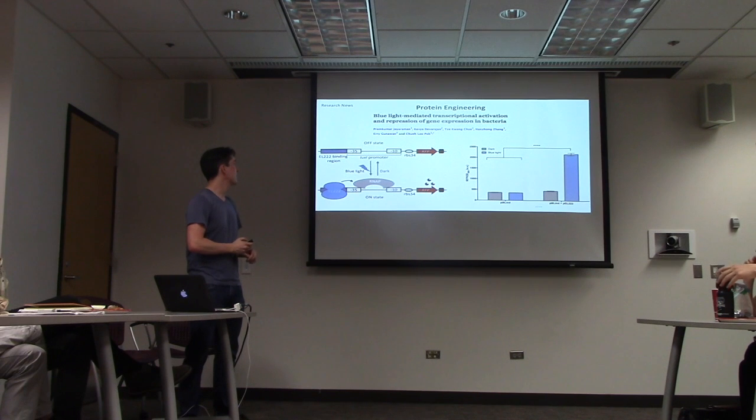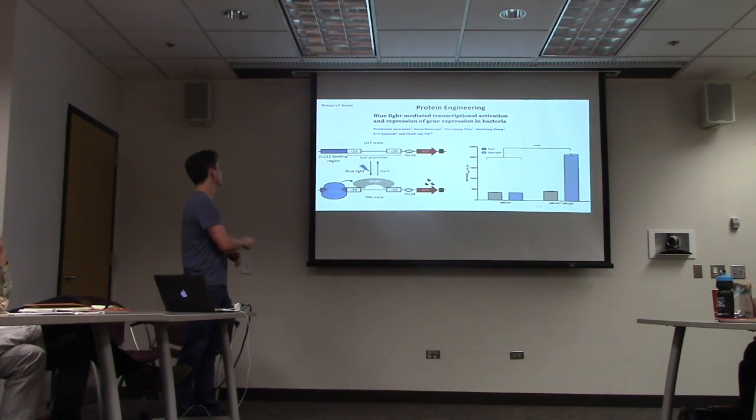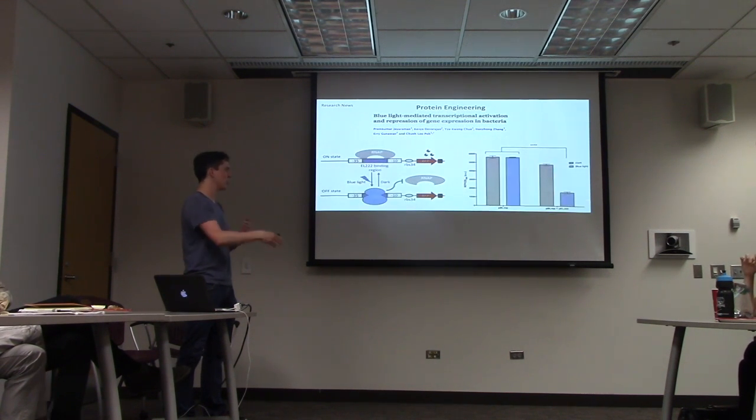And there's also been some work in optogenetics. This group developed this optogenetic controller of gene expression in E. coli, where this DNA binding protein, when you shine blue light on it, it can either bind and activate transcription, or if you shine or even pulse blue light in your repressed transcription. So, optogenetics making progress.